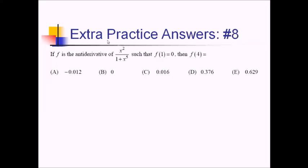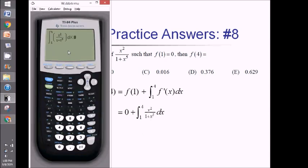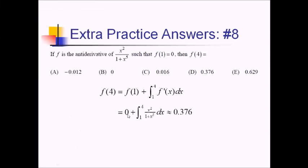For this problem, if f is the antiderivative of x²/(1+x⁵) such that f(1) = 0, we want f(4). Using the Fundamental Theorem of Calculus: f(4) equals f(1) plus the integral from 1 to 4 of f prime. Since f(1) is 0 and f prime is x²/(1+x⁵), we just compute the integral from 1 to 4 of that fraction on the calculator, which comes out to approximately 0.376. That's choice D.